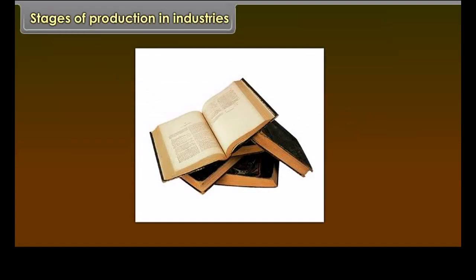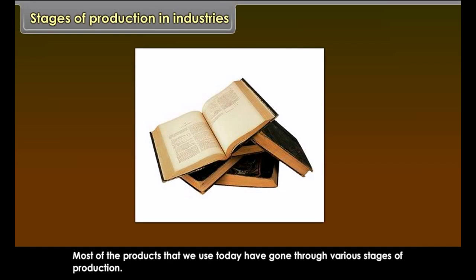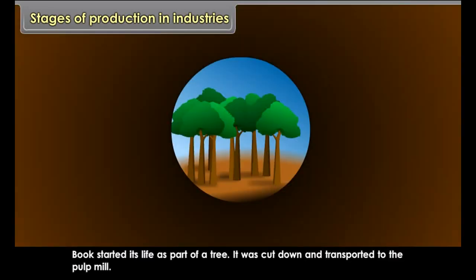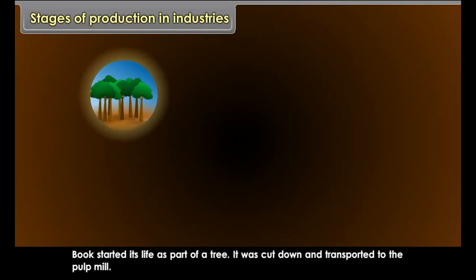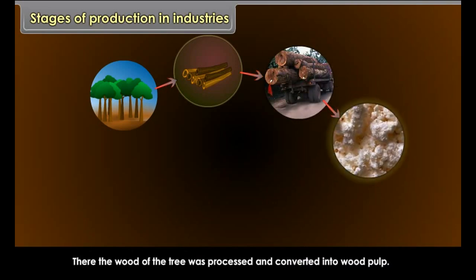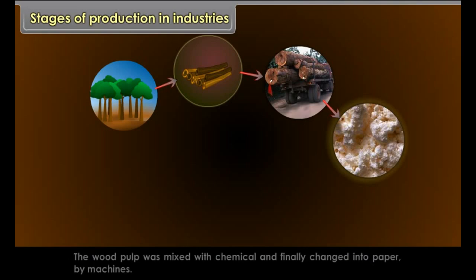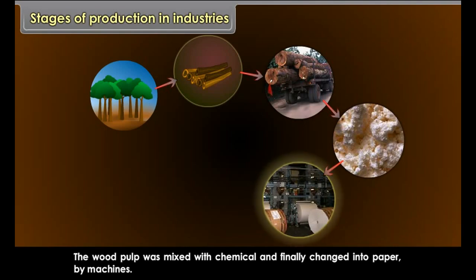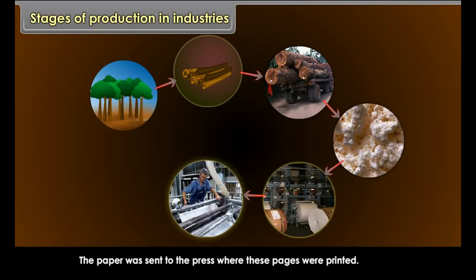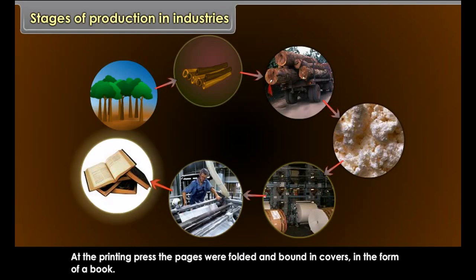Most of the products we use today have gone through various stages of production. Take the example of a book: it started its life as part of a tree, which was cut down and transported to the pulp mill. There, the wood was processed into wood pulp, mixed with chemicals, and converted into paper by machines. The paper was sent to a printing press where pages were printed, folded, and bound into covers. Finally, the finished product was ready for sale.